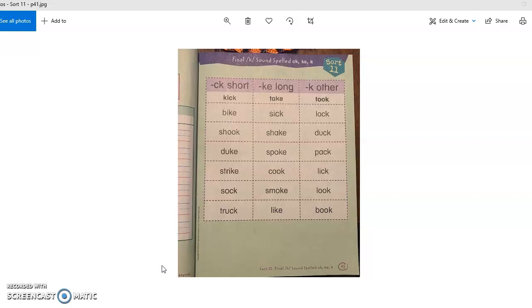You should be on sort 11 now, and for this sort, we are focusing on the final K sound. Okay, so if you look up at the top, you've got the final K sound, and it's spelled CK or KE or just K.